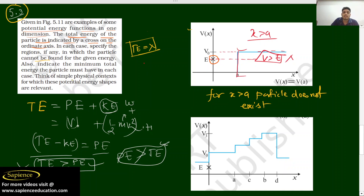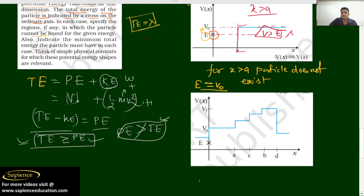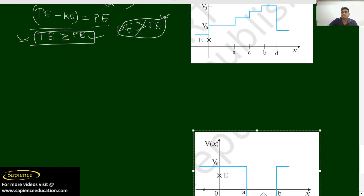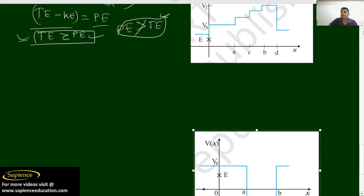They have also asked us to indicate the minimum total energy the particle must have in this case. Definitely, total energy must be at least equal to the potential energy.